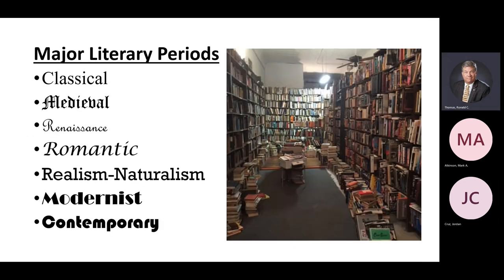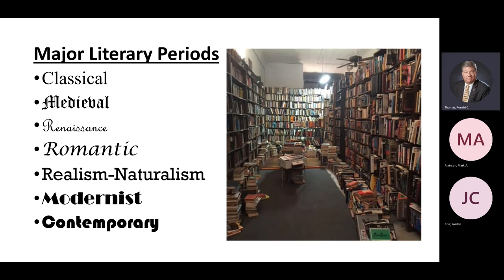Literature can be quite a mess when we try to organize it. We could put all the red books on one shelf, but that wouldn't tell us anything. We need to group them by kinds of subjects or, in this case, by time periods. So we have: classical, medieval, renaissance, romantic, realism and naturalism, modernist, and contemporary.